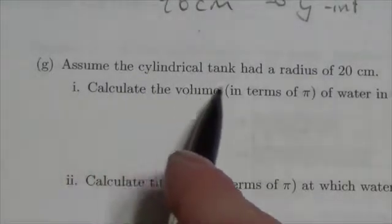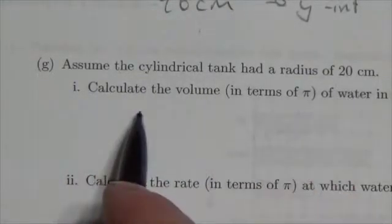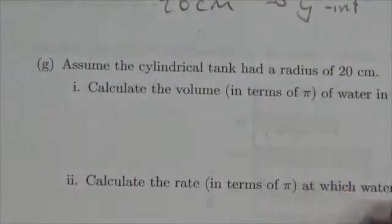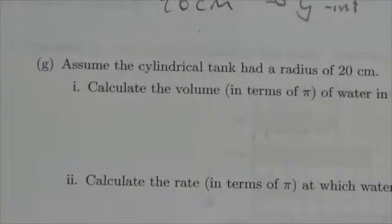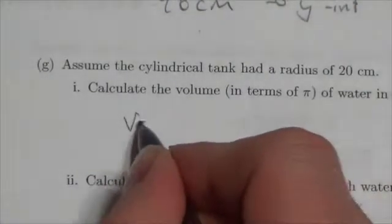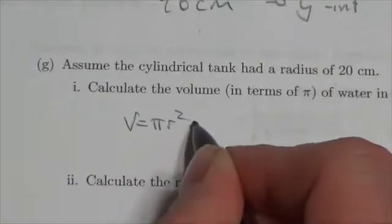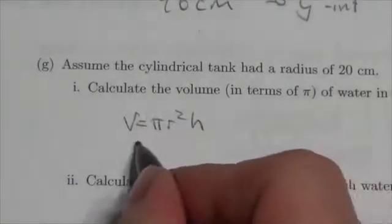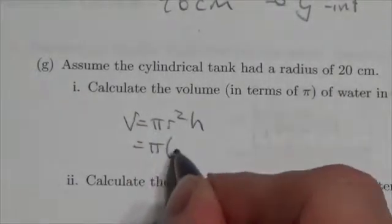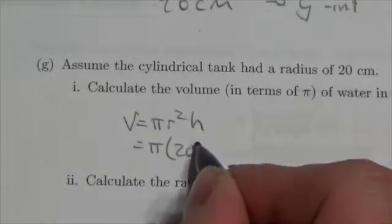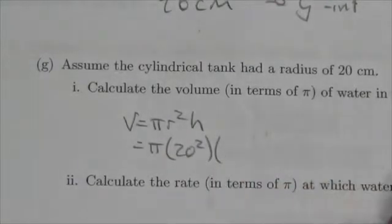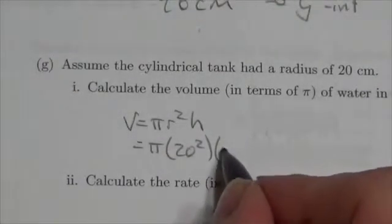Okay, and now finally here a couple questions. Assume the cylindrical tank had a radius of 20 centimeters. Calculate the volume of water in the tank after five minutes and after 10 minutes. Well, volume is going to equal πr²h. So in this case here that's going to be π times 20 squared, and after five minutes that was at 61. So I'll just do this really quickly on my calculator: π times 20 squared times 61.